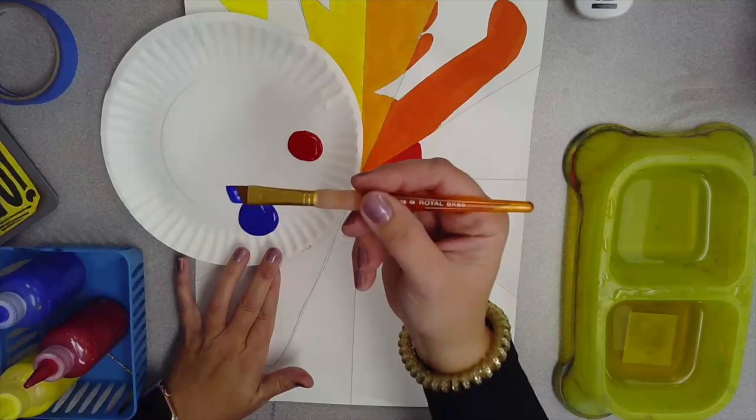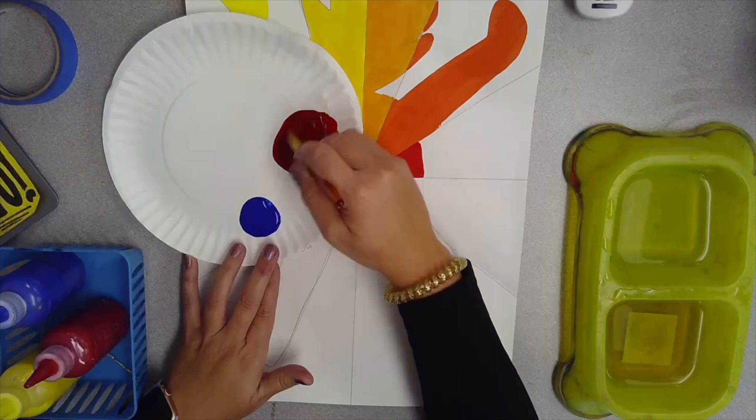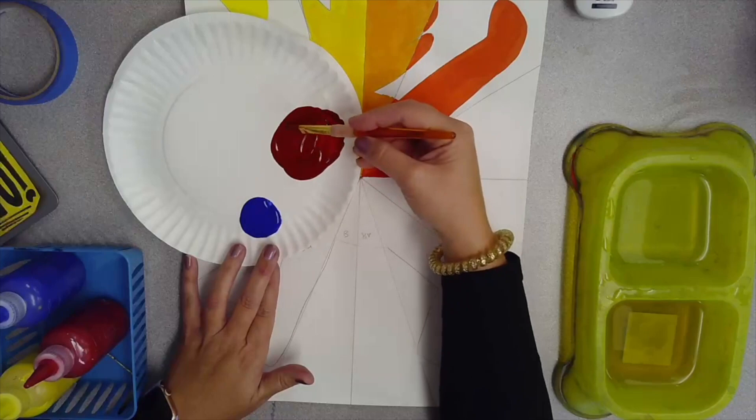Since it's called red violet, it's mostly got red in it. So you're just going to add a little bit of blue to all of your red. That will make a maroon color, which is basically red violet.